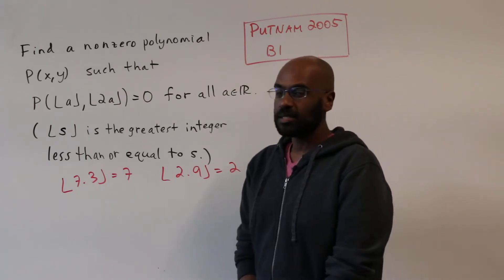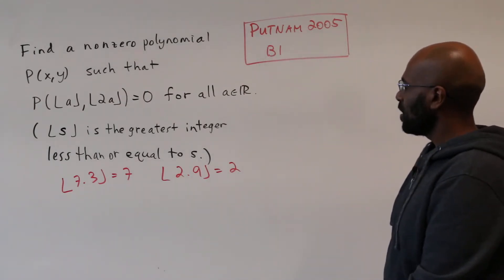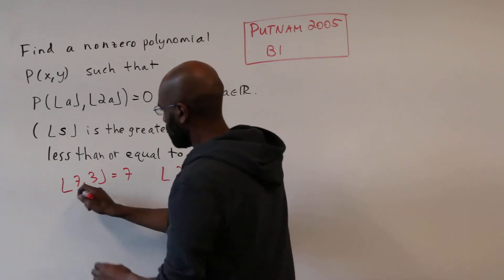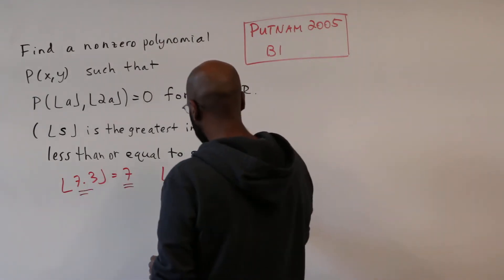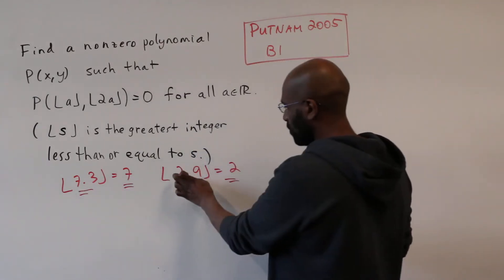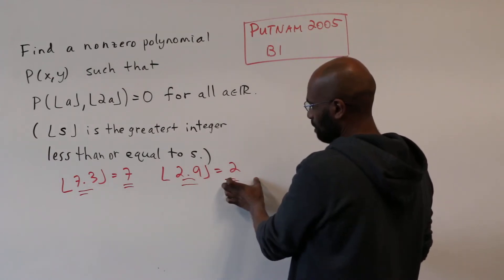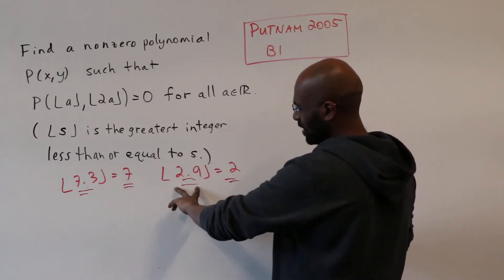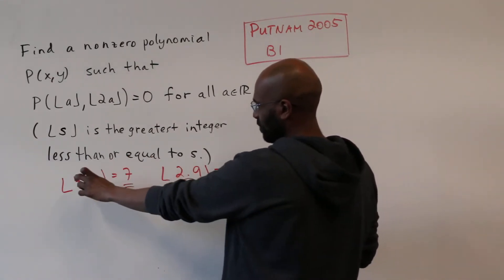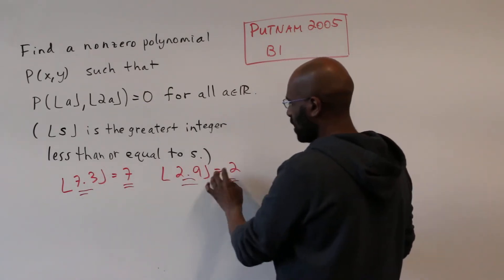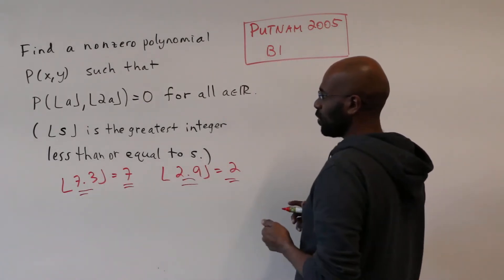All right, great. So how do we go about this problem? So if you look at these numbers here, you notice that there's a relationship between the numbers we're inputting and the floor, which is that when I take this number 2.9 or 7.3 and subtract the floor, I get a number that's between 0 and 1.